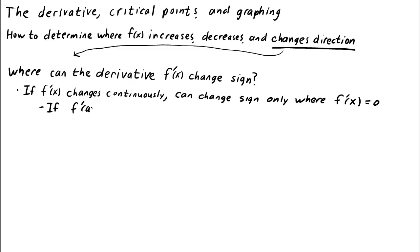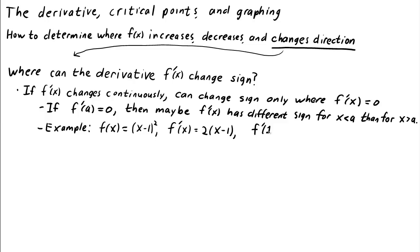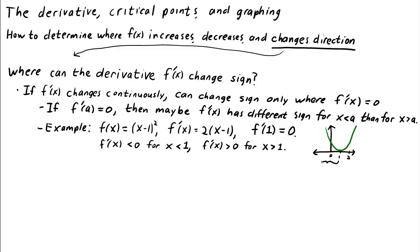If the derivative f prime of x equals zero at some point x equals a, then it's possible that f prime of x has a different sign for x less than a than for x greater than a. For example, the function f of x equals x minus 1 squared, with derivative f prime of x equals 2 times x minus 1, has a zero derivative at x equals 1. In this case, f prime of x is less than 0 for x less than 1, and f prime of x is greater than 0 for x greater than 1. The graph of f looks like this, and we can see that it decreases until x equals 1 and increases after that.